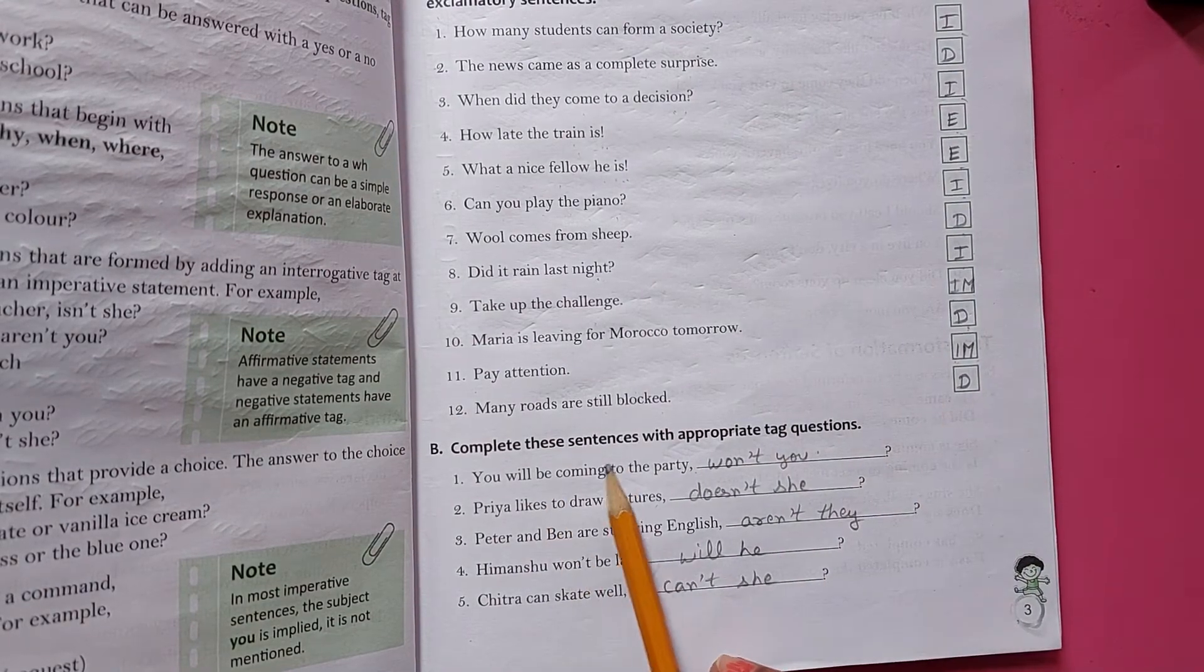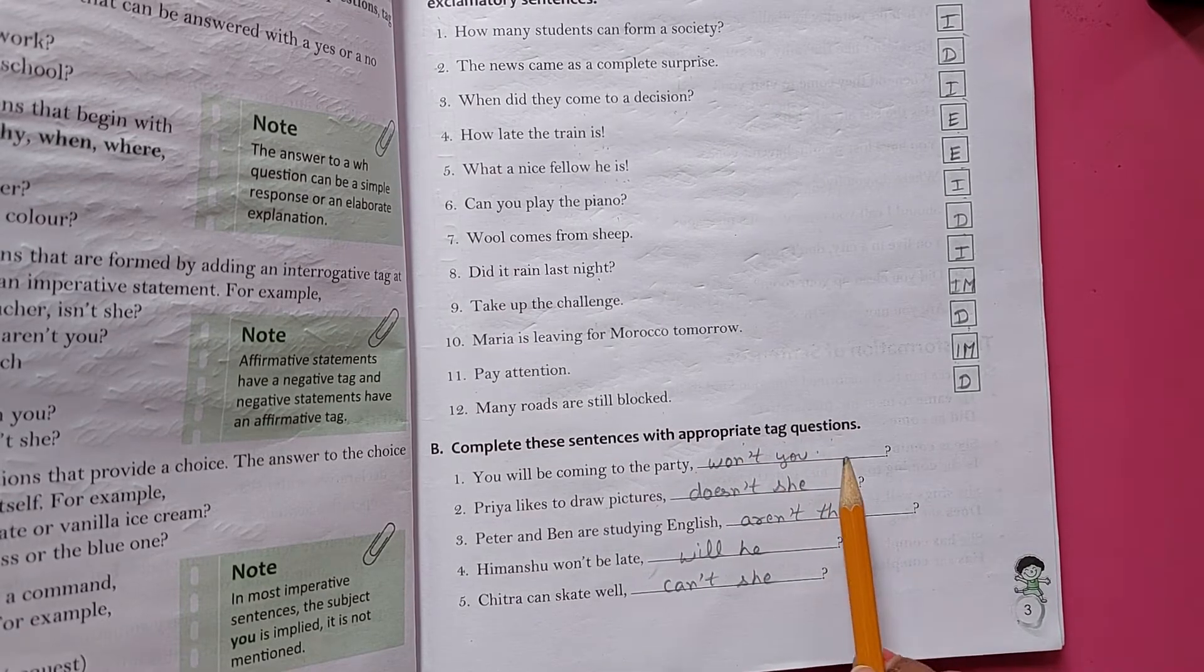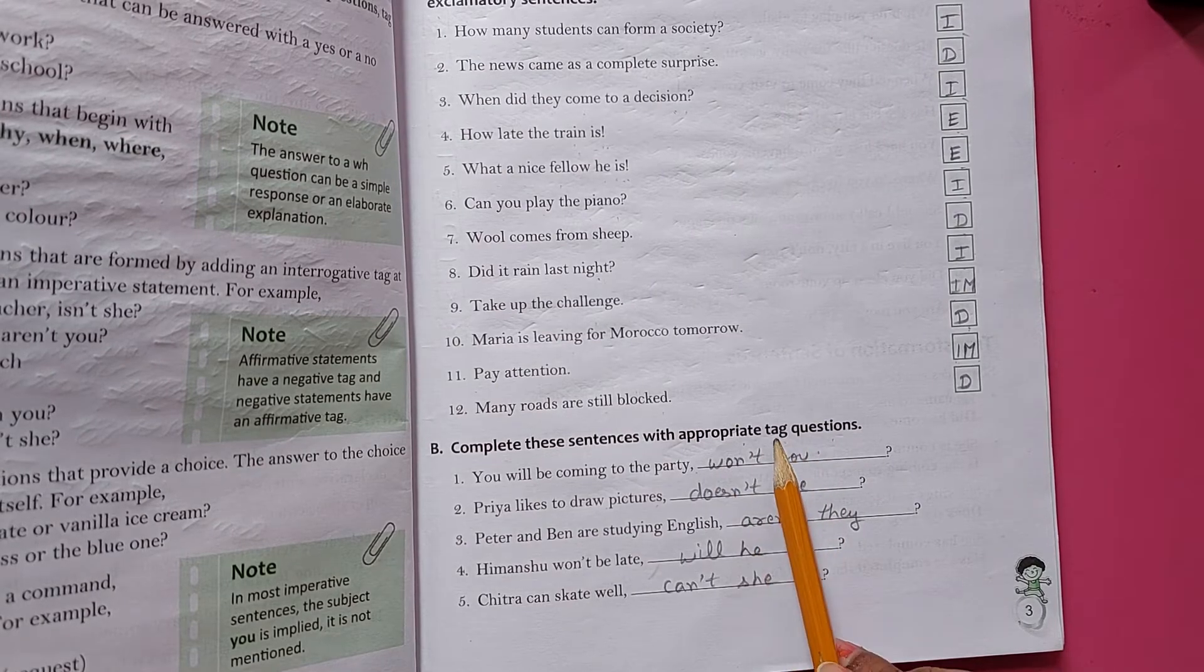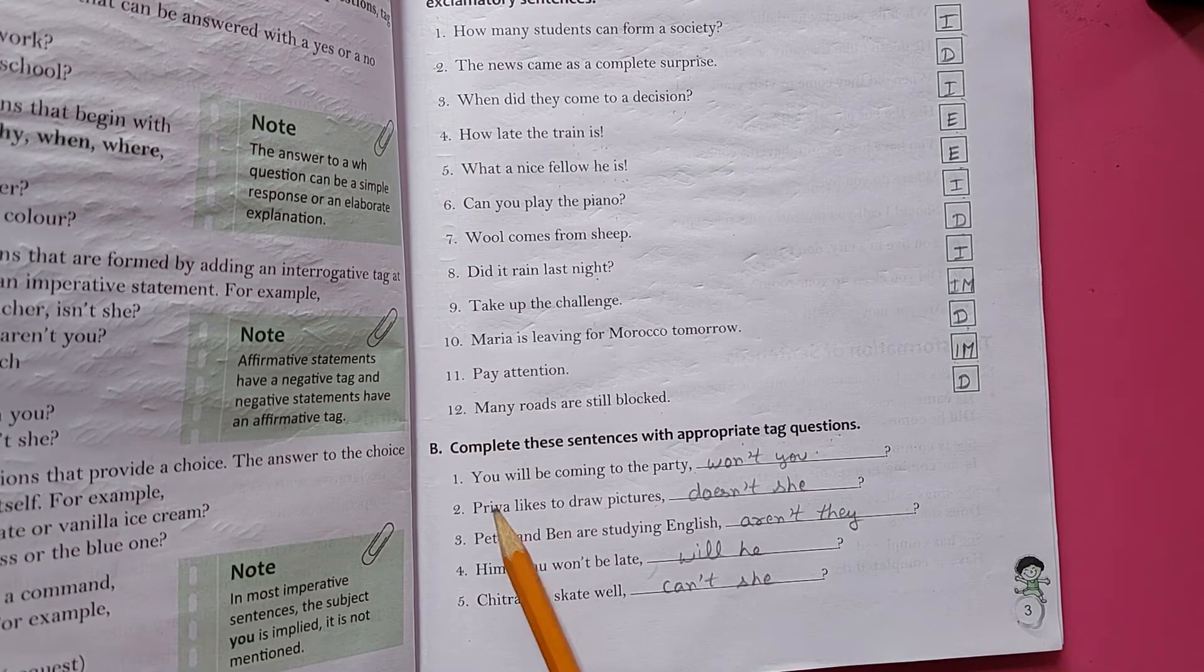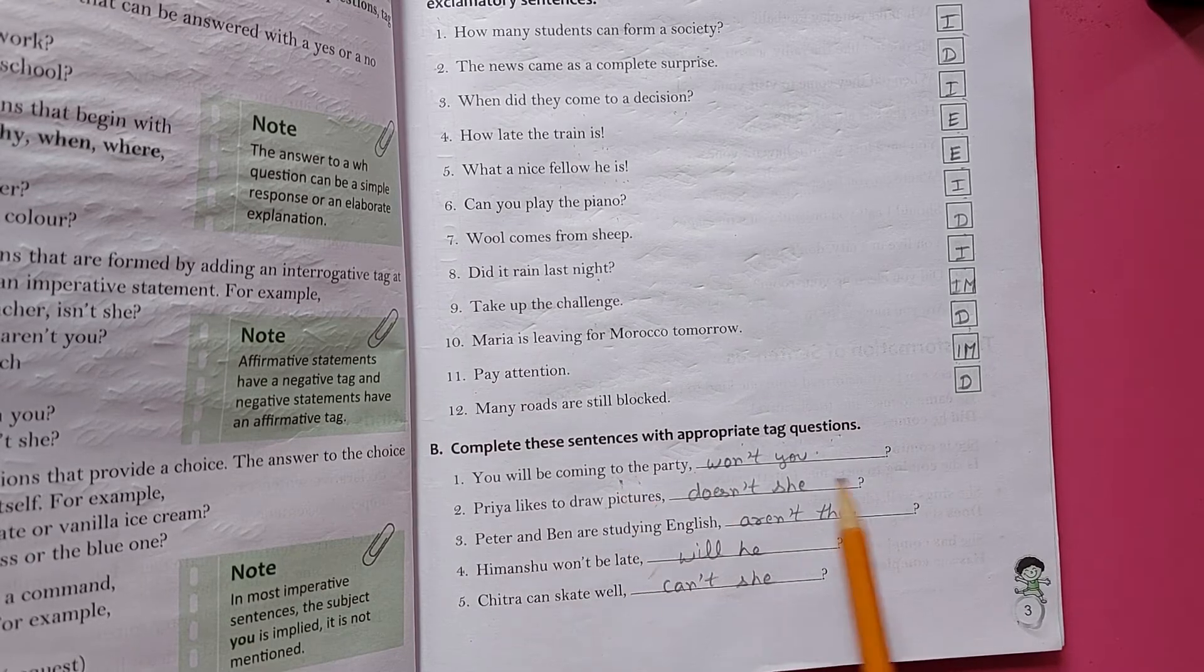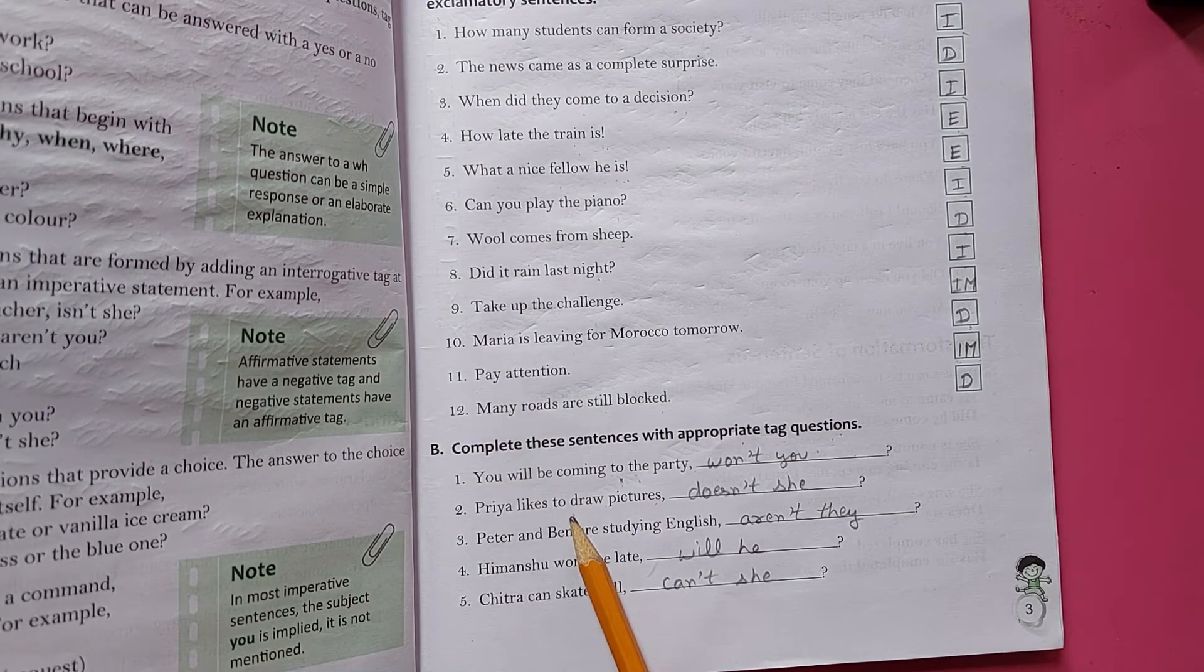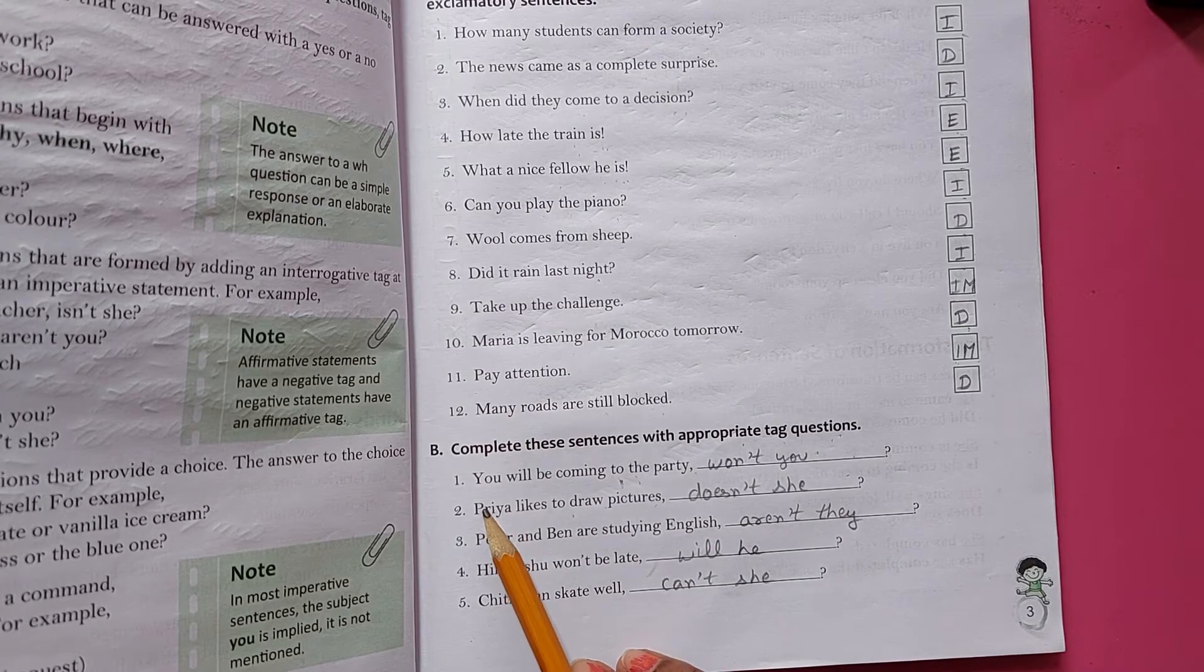Now, complete these sentences with appropriate tag questions. Beta, yesterday I have told you in the first assignment that what is the tag questions? Tag questions kya houti hai? Where the sentence comes from positive, the answer comes from negative. The answer comes from negative, the answer comes from positive.